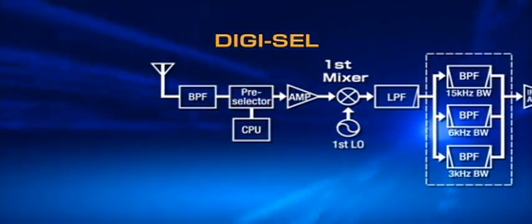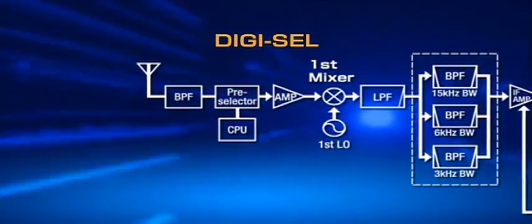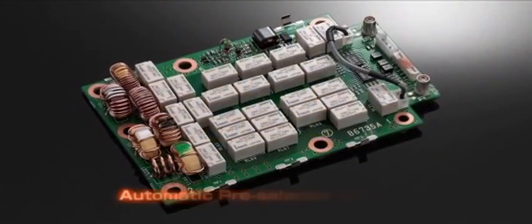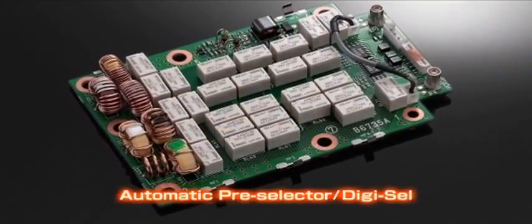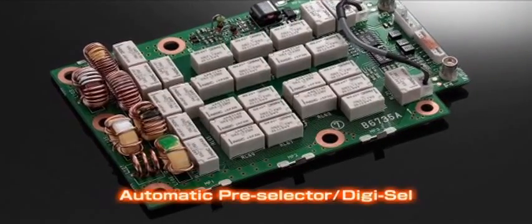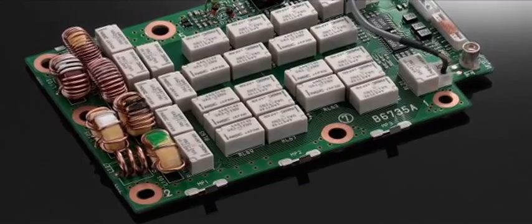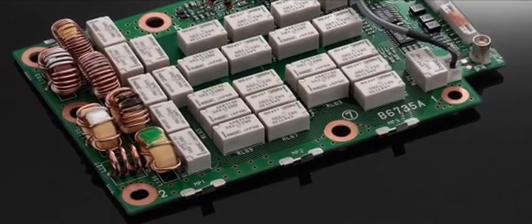The digicell function rejects unwanted suppression by out-of-pass band interference at the primary stage of signal processing. Within the HF bands, it automatically tracks the intended signal at a minimum of 2 kHz steps, keeping the preselector's bandwidth centered on the operating frequency.